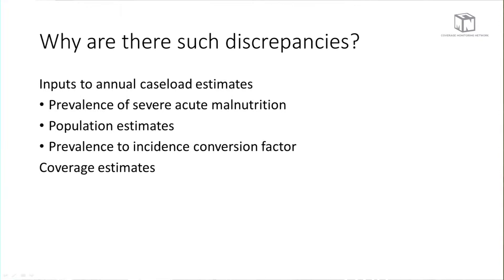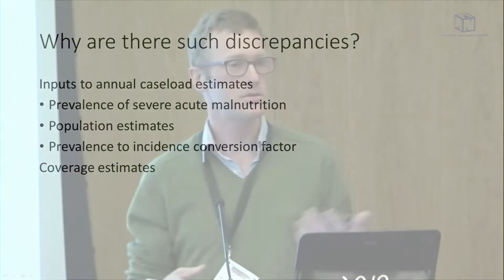Looking at the inputs to the annual caseload estimates: the prevalence of severe acute malnutrition can be greatly overestimated with bad quality data, but this doesn't explain our problem. Population estimates have errors — some countries have better quality data than others. The prevalence-to-incidence conversion factor is a standard model that we force on a non-standardized world. We know conditions are different in Chad than in Senegal, but it's the best method we have so far.